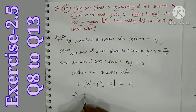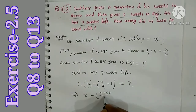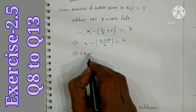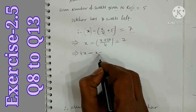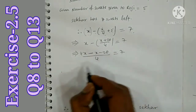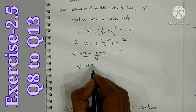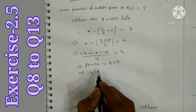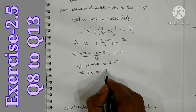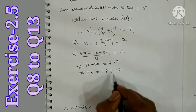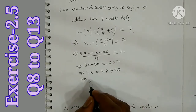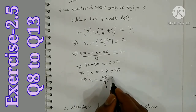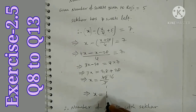Simplifying: x minus x by 4 minus 5 equals 7. Multiply through by 4: 4x minus x minus 20 equals 28. So 3x minus 20 equals 28. Then 3x equals 28 plus 20 equals 48. Dividing by 3: x equals 16.